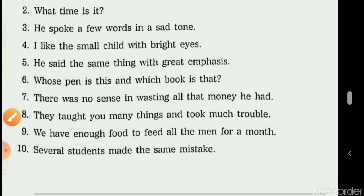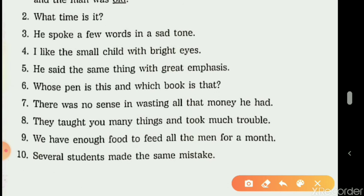The third sentence: 'He spoke a few words in a sad tone.' The two adjectives are 'few' and 'sad.' 'Few' describes the noun 'words' — how many words? Few words — so 'few' is adjective of number. 'Sad' describes the noun 'tone' — what kind of tone? Sad tone — so 'sad' is adjective of quality.